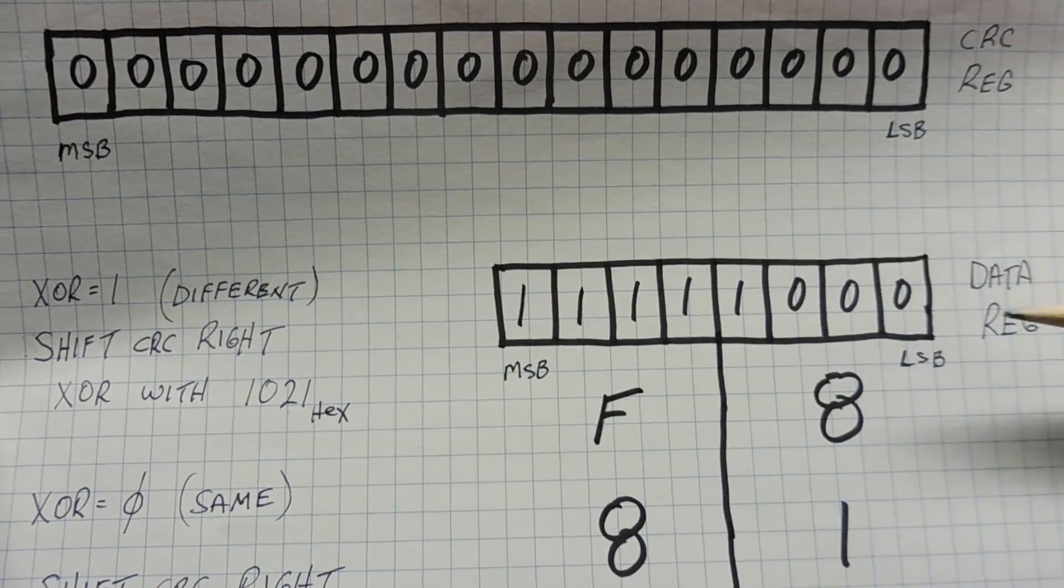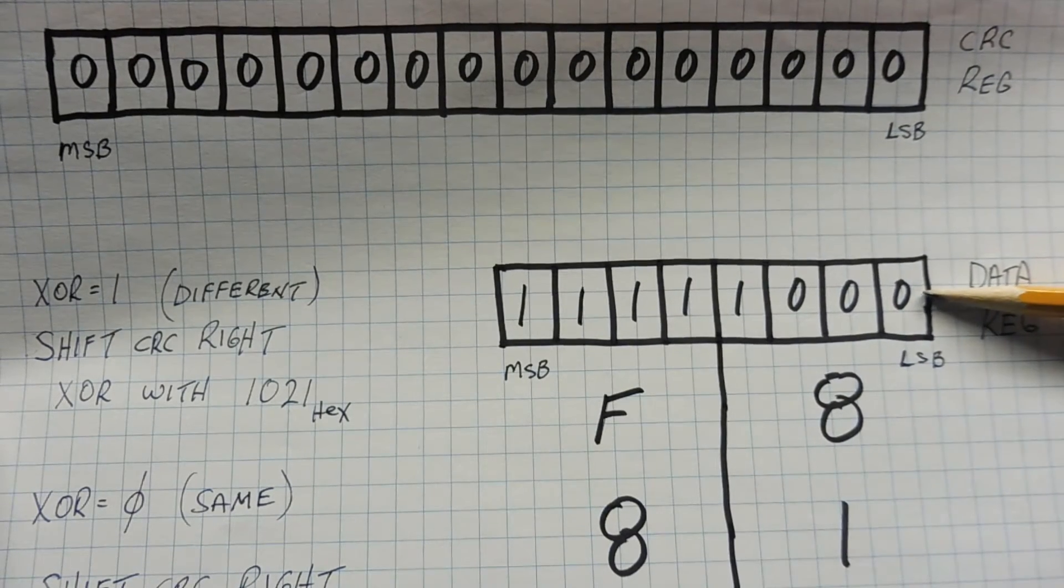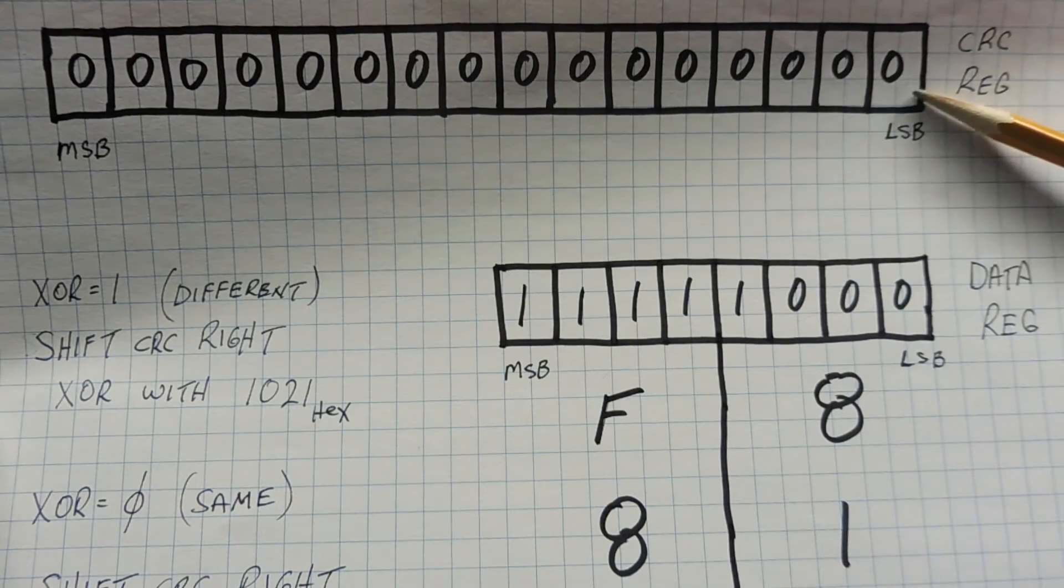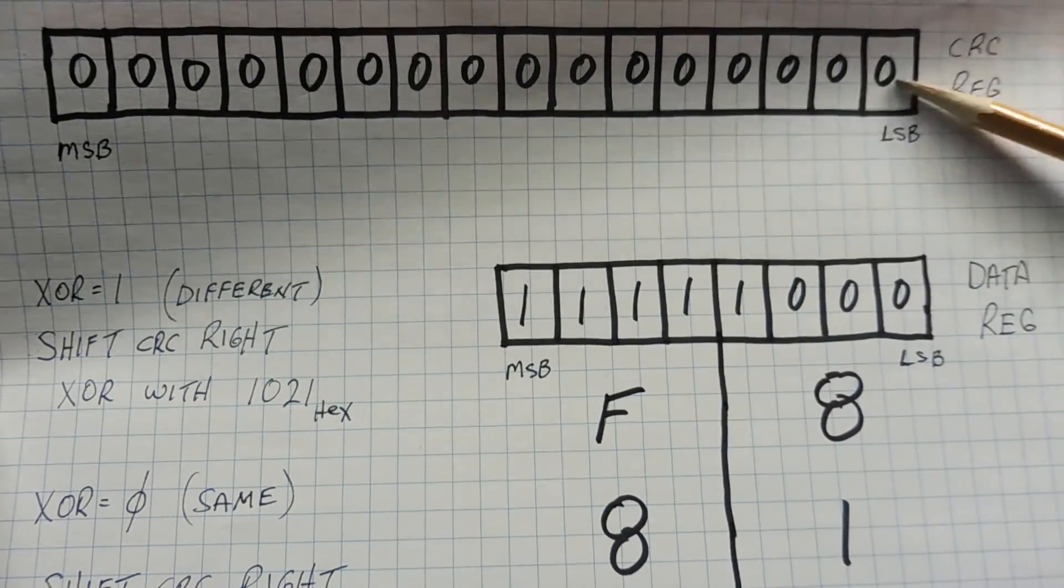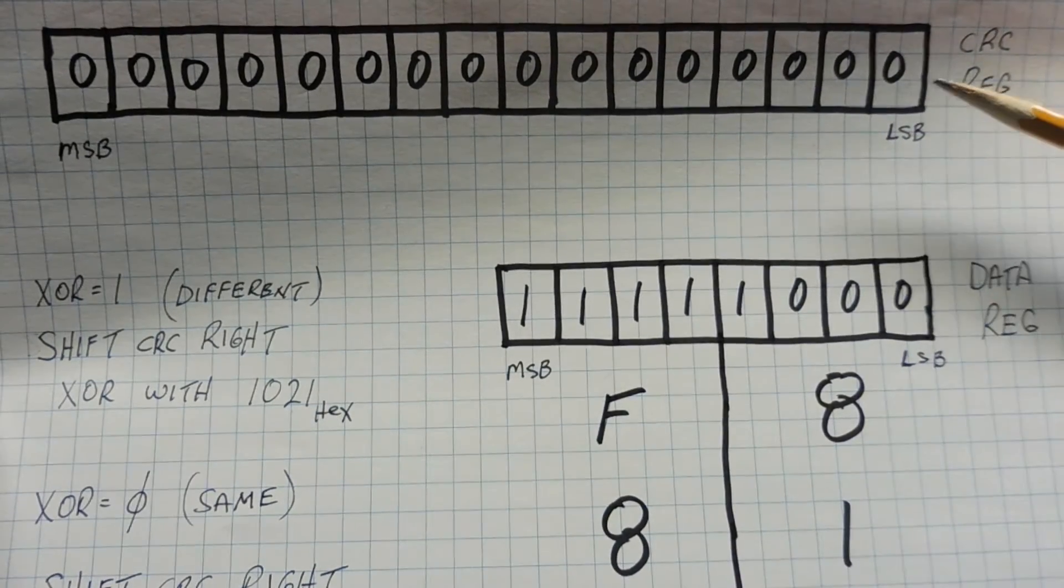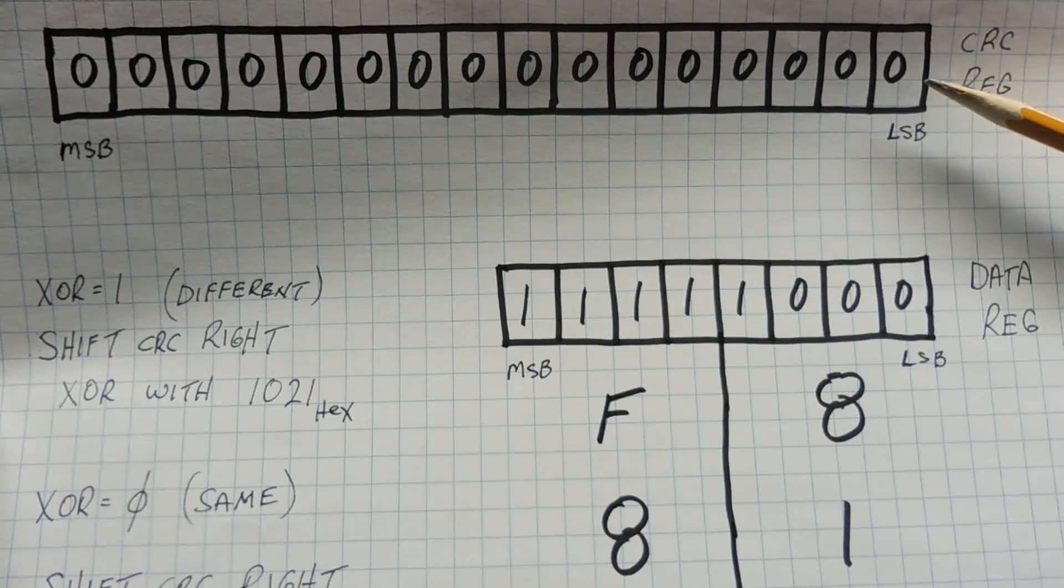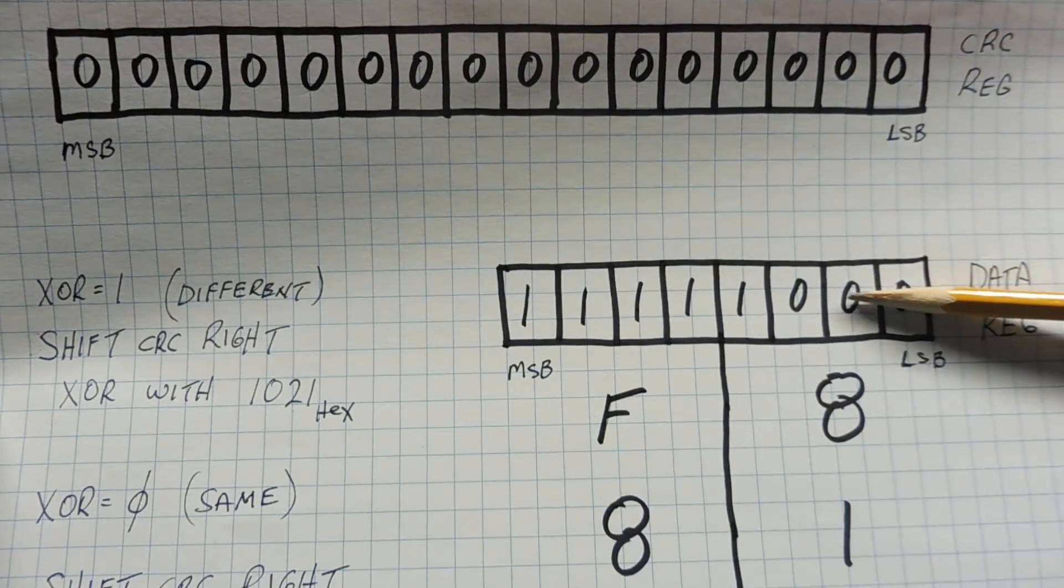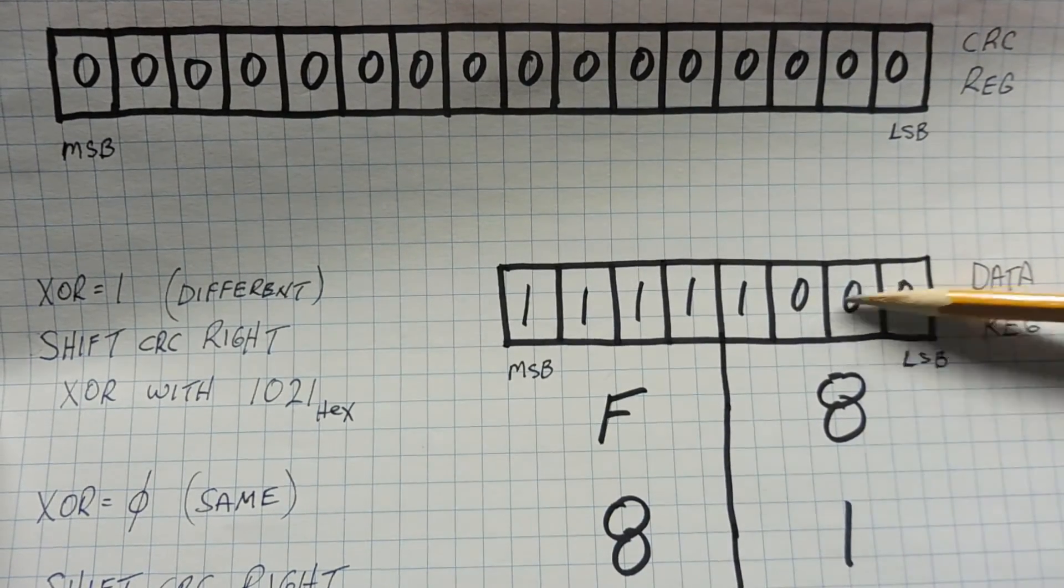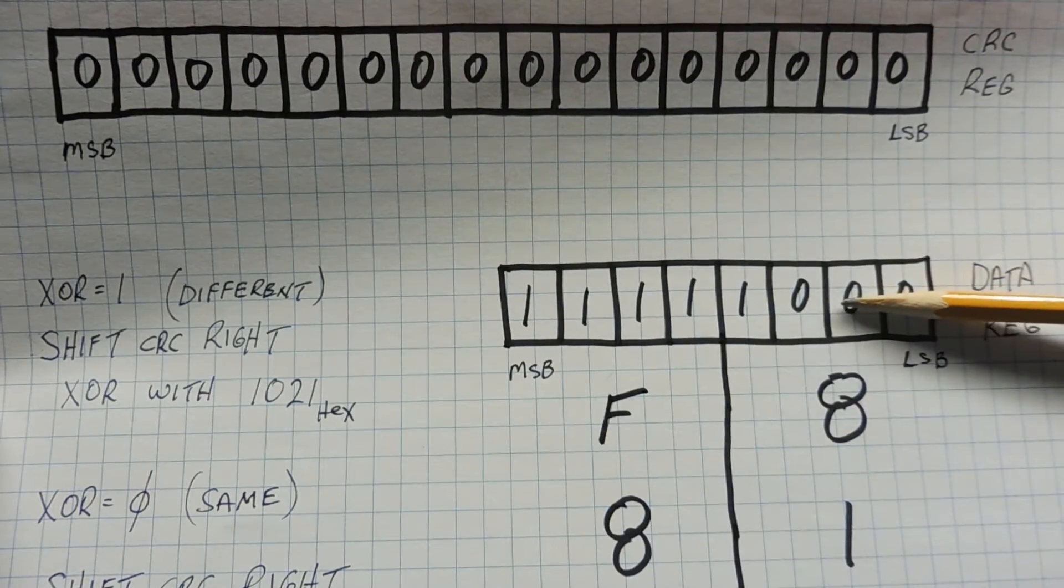Then we have a look at the least significant bit of the data register, and have a look at the least significant bit of the CRC register. And if they're the same, then we do a shift right on the CRC register. And we go to the next bit on the data register, we do the same thing. We compare it to the least significant bit of the CRC register.